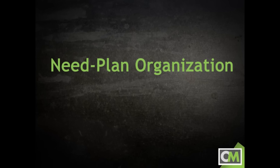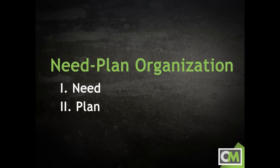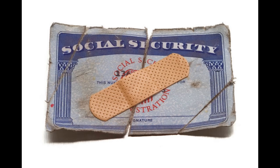The first is need-plan. Like some of the other patterns, need-plan is not overly complicated. The first main point establishes the need for the change for which you are advocating, and the second main point details your plan for accomplishing that change. If the need is well known, like the insolvency of the social security system, then you probably won't have to spend as much time explaining why a change is necessary, and you can dedicate more time to sharing the details of your plan.